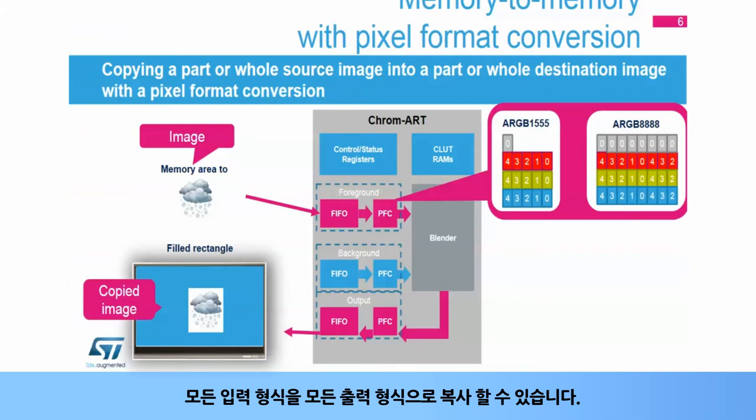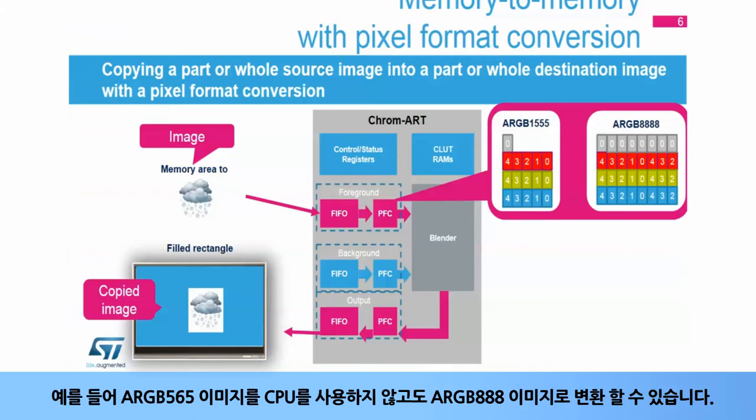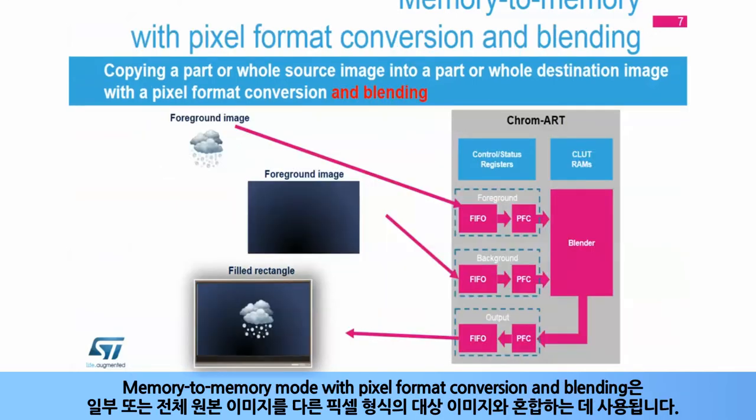It can copy any input format to any output format. For example, it can copy an ARGB 565 image into an ARGB 888 image without having to use the CPU. Memory to memory mode with pixel format conversion and blending is used to blend a part or whole source image with a part or whole destination image with a different pixel format.